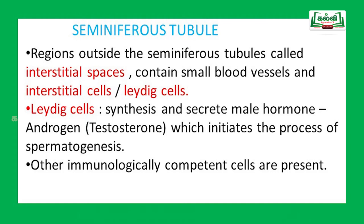The region outside the seminiferous tubules is called the interstitial spaces. These contain small blood vessels, interstitial cells or Leydig cells, and immunologically competent cells. The Leydig cells play a very important role in male reproduction — they synthesize and secrete a male hormone called androgen, otherwise called testosterone. This hormone is secreted from the testis, hence the name testosterone. Testosterone initiates the process of spermatogenesis.